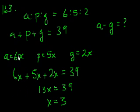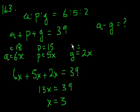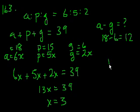So how many apples are there? 6x, there are 18 apples. We don't have to figure out the peaches, but there are 15 peaches, and there are 6 grapes. If you want to know how many more apples there are than grapes, 18 minus 6 equals 12. These are all in pounds, so there are 12 pounds more of apples than grapes. That's choice B.